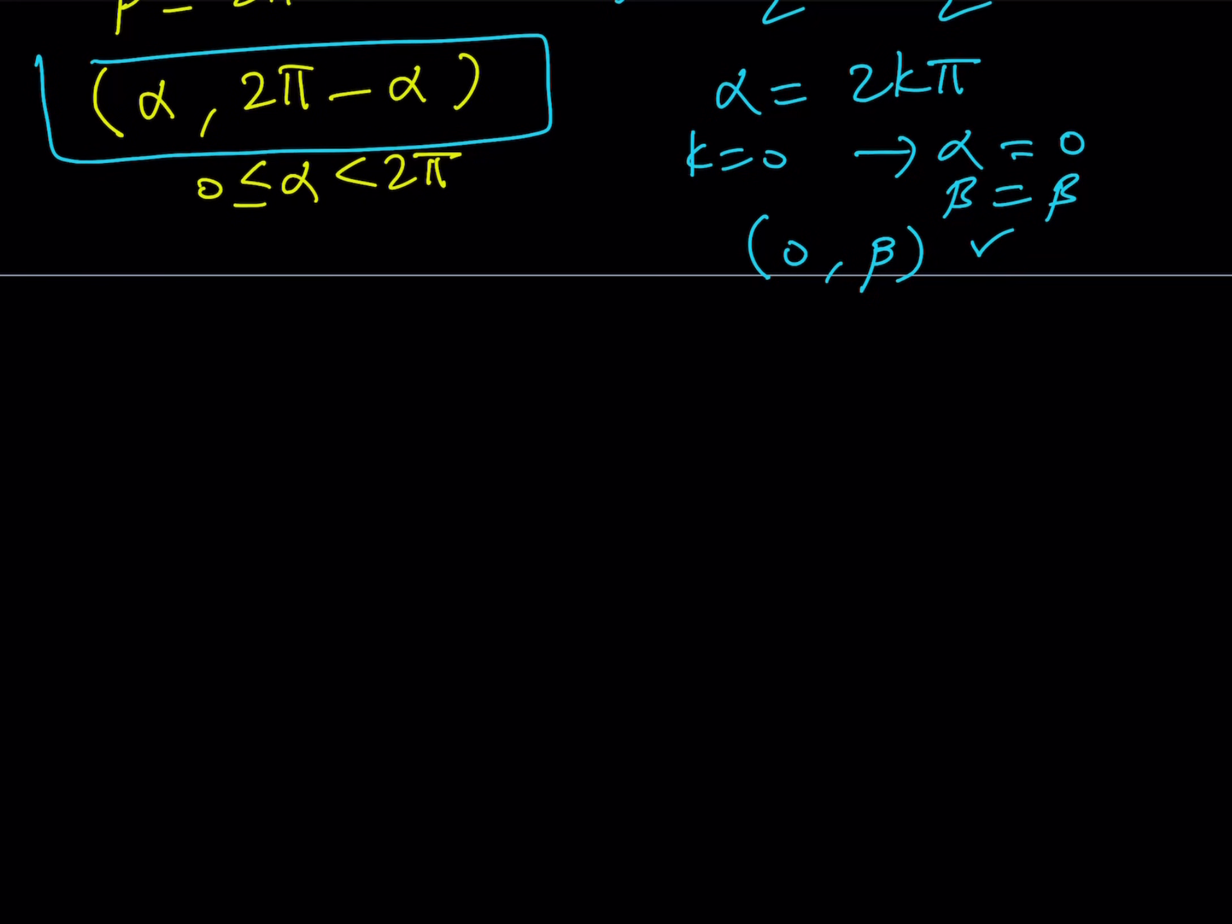Our solutions are basically alpha and 2 pi minus alpha. Then another solution will be alpha comma 0 or 0 comma beta. These are basically all the solutions that you can get.